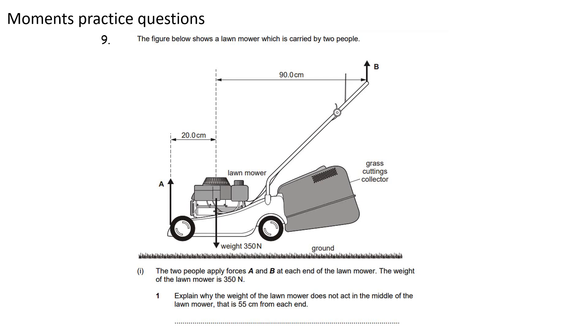Hello there, this is a run through of the moments practice questions and we're looking at the first question here. Part one: the two people apply forces A and B at each end of the lawnmower which has been carried by the two people. The weight of the lawnmower is 350 newtons.